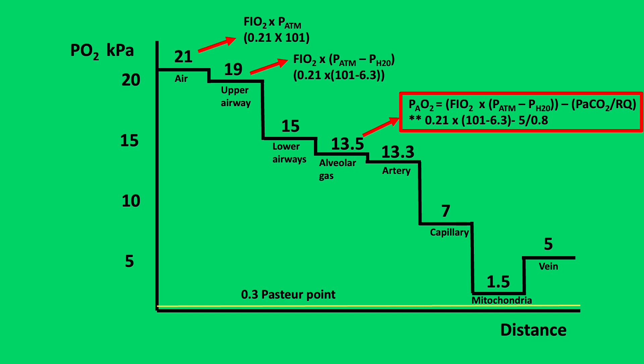The first step is due to humidification in the upper airway. The SVP of water at 37 degrees is 6.3 kilopascals, leading to a reduction in PO2 from 21 to 19. The second and third steps are due to the mixing of oxygen with dead space gas within the airway and mixing with alveolar gas, leading to a reduction to 15 and 13.5 kilopascals respectively.